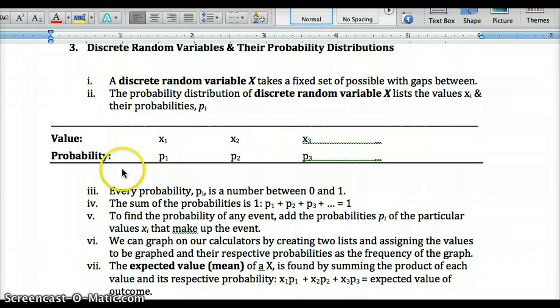So here we have what a probability distribution will look like. You'll have values on the top, x1, x2, x3, and so on, for however many values you have, depending on the situation or the chance process and the random variable we're measuring. So these are the possible outcomes, like 0 heads, 1 head, 2 heads, that sort of thing. And their respective probabilities. So this is the probability of this value. P2 is the probability of x2. P3 is the probability of x3. So each value has a respective probability. Probabilities have to be between 0 and 1, and all of them have to sum to 1.